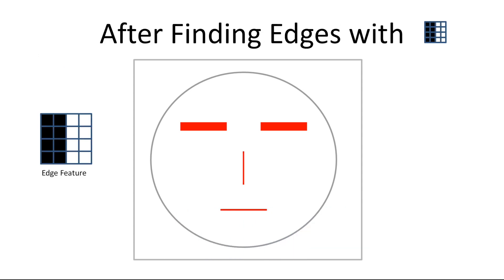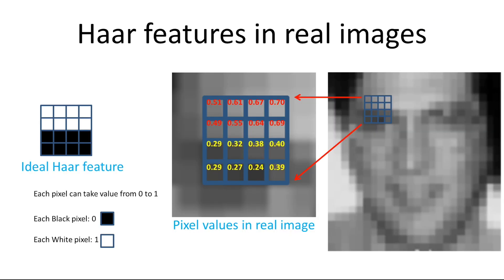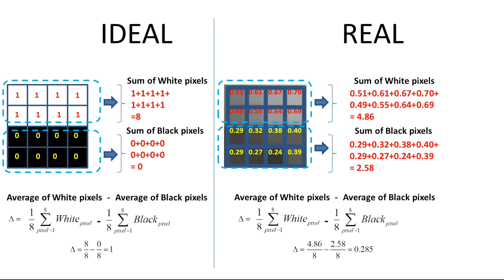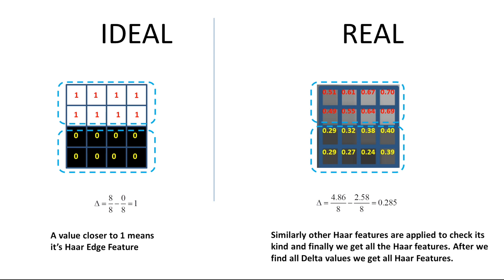This was just a very simple example to illustrate the edge features. In real images, the pixels may take values from 0 to 1. To find the delta from an edge feature of the eyebrow region, the values of all pixels are shown. On the left side, we have an ideal case of a horizontal edge feature — all upper 8 pixels are 1s and all lower 8 pixels are 0s. To find the delta for this ideal case, we subtract the average of the lower region of black pixels from the upper region of white pixels, giving a delta of 1. On the right side we have a real image case, and to find out if the resulting delta from this image window is a horizontal edge feature, we do the same subtraction process. If the value of delta is near to 1, we can say that this feature is a HAR edge feature. Similarly, other HAR features are applied to check their kind, and finally we get all the HAR features.